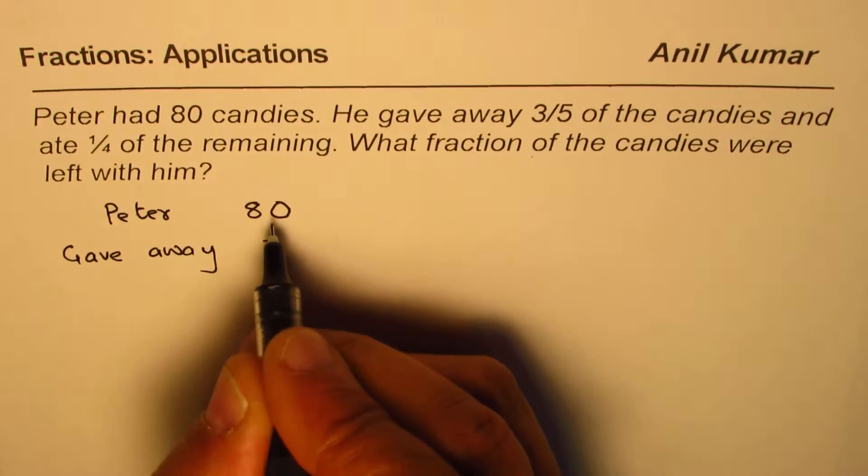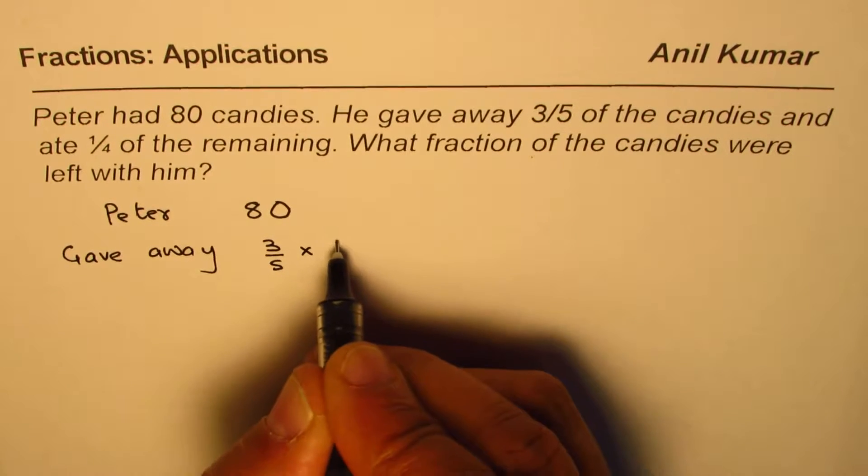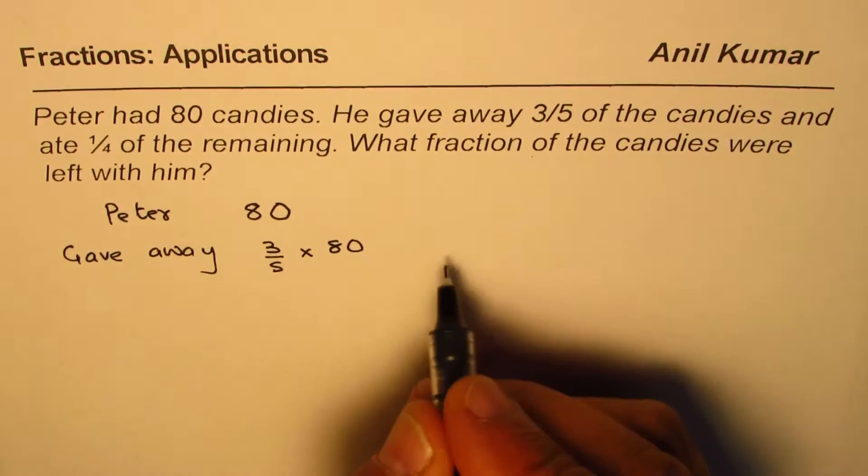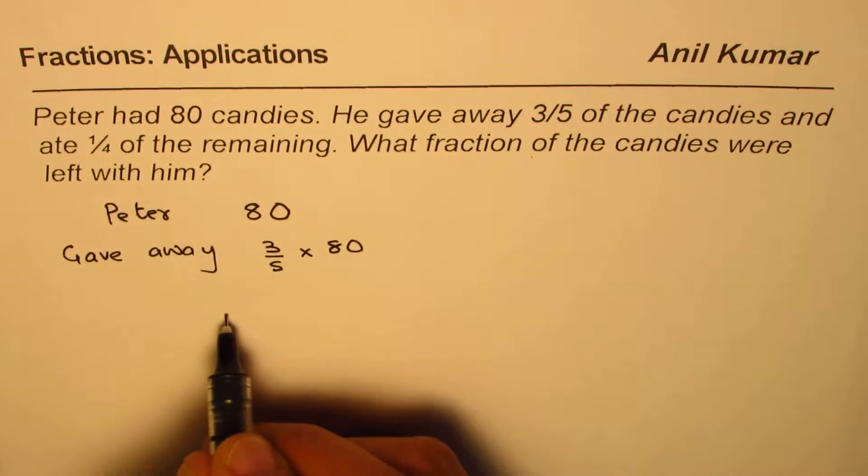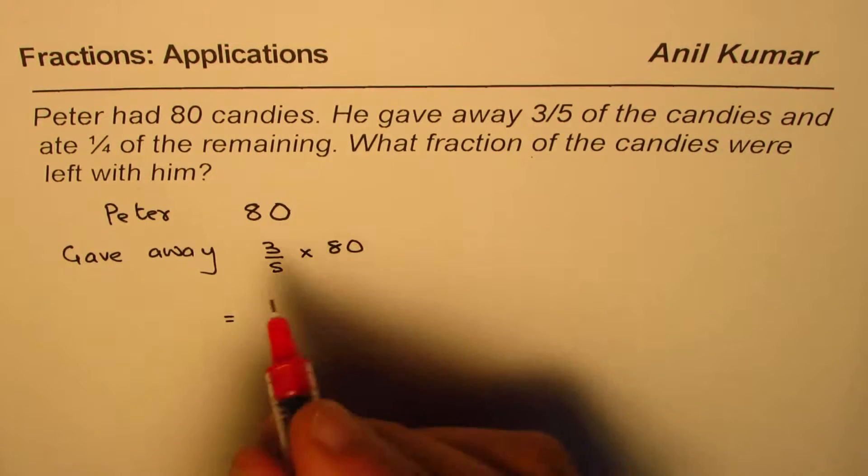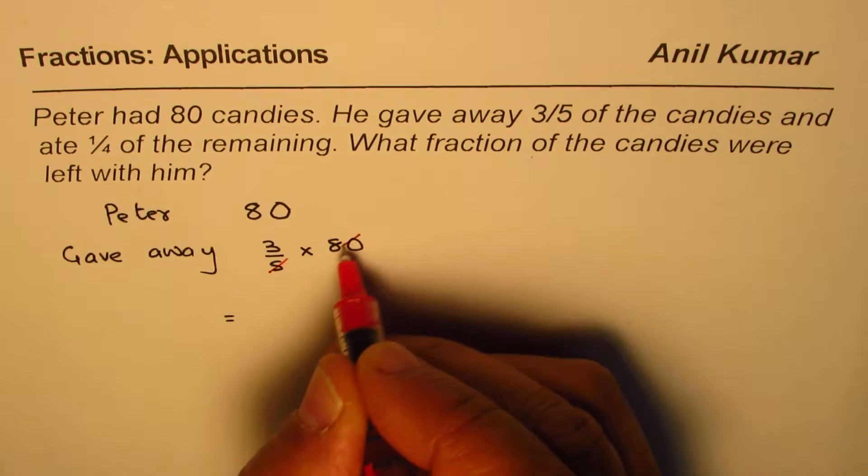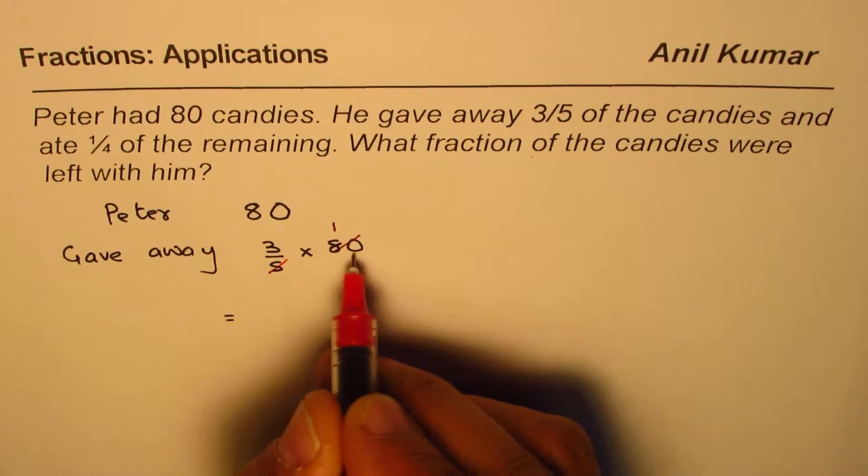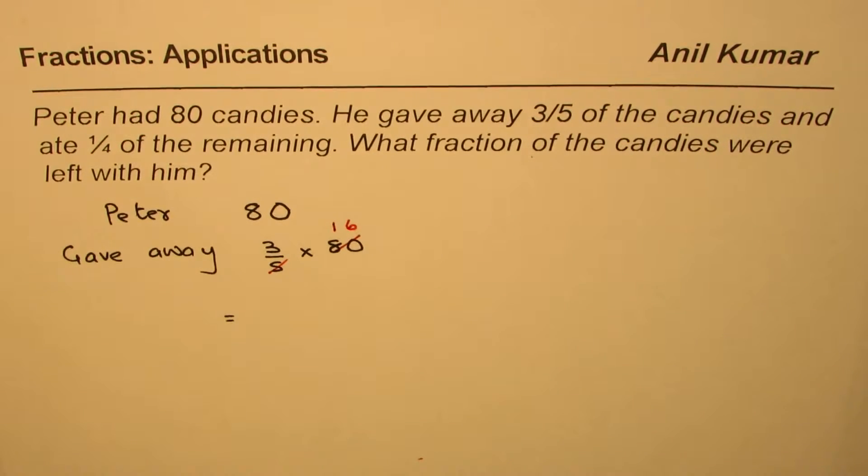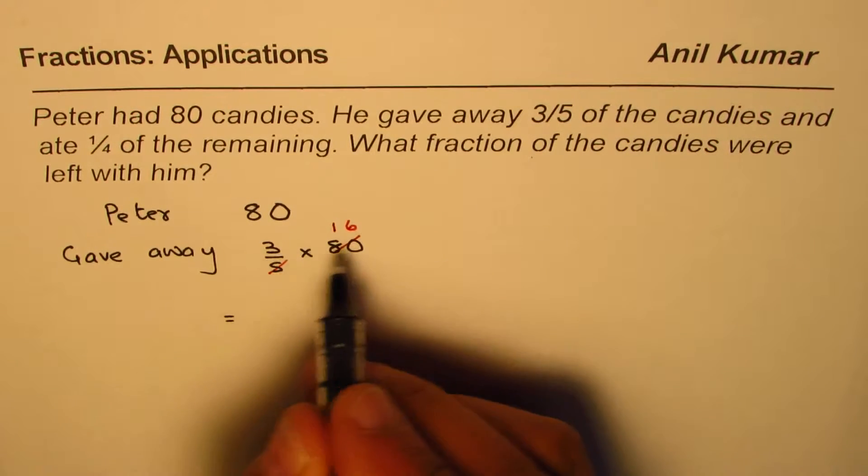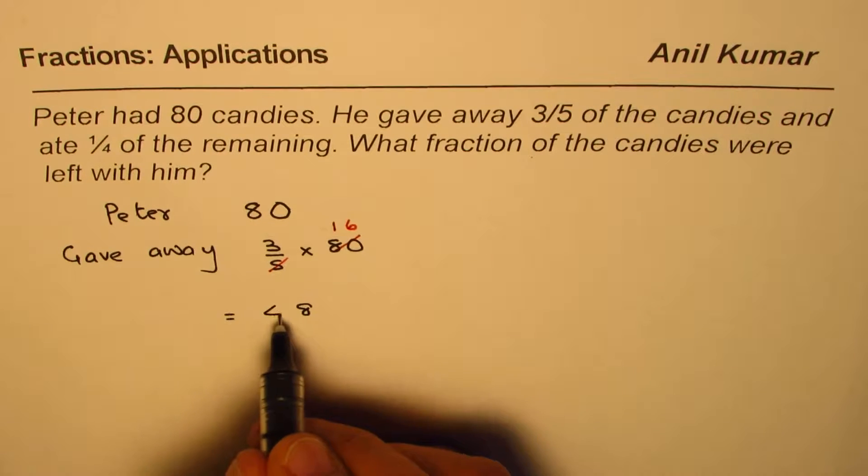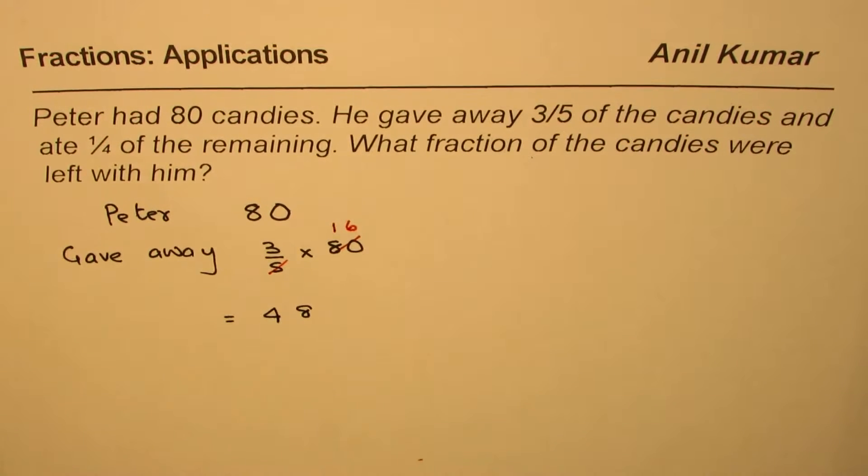That means 3/5 of 80, which means times 80. Let's calculate this amount. To find this, we should first simplify. So when you divide 80 by 5, 5 times 1 is 5, 3 goes into 8 once, remainder 3, bring down 0, that's 16. Then you can multiply 16 by 3. 6 times 3 is 18, write 8 carry 1, 1 times 3 is 3 plus 1 is 4, so 48. So he gave away 48.